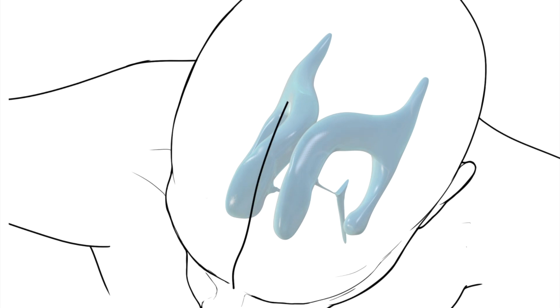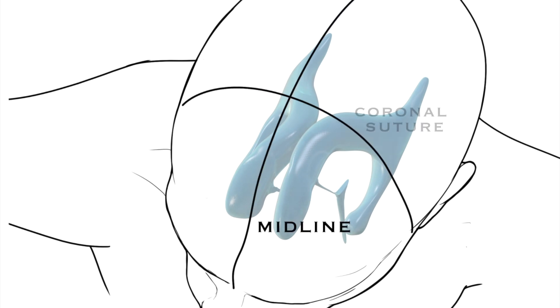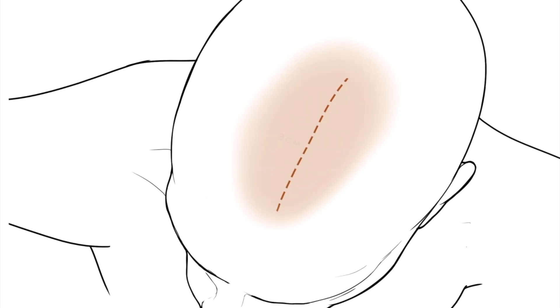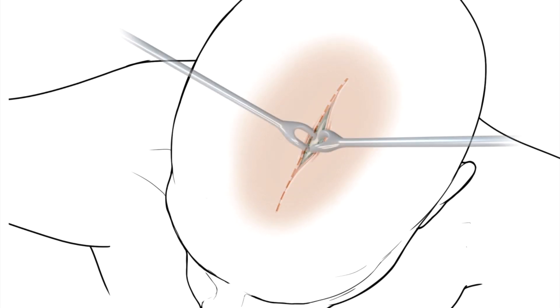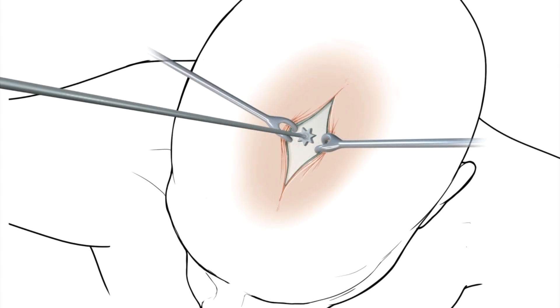Enter the endoscopic third ventriculostomy. In this animation, you can see how we use superficial landmarks to determine the best entry point to enter the brain and ultimately the ventricular system. In this case, a vertical incision is made, the skin is retracted, and a drill is brought into the field to perform a small craniotomy known as a burr hole.